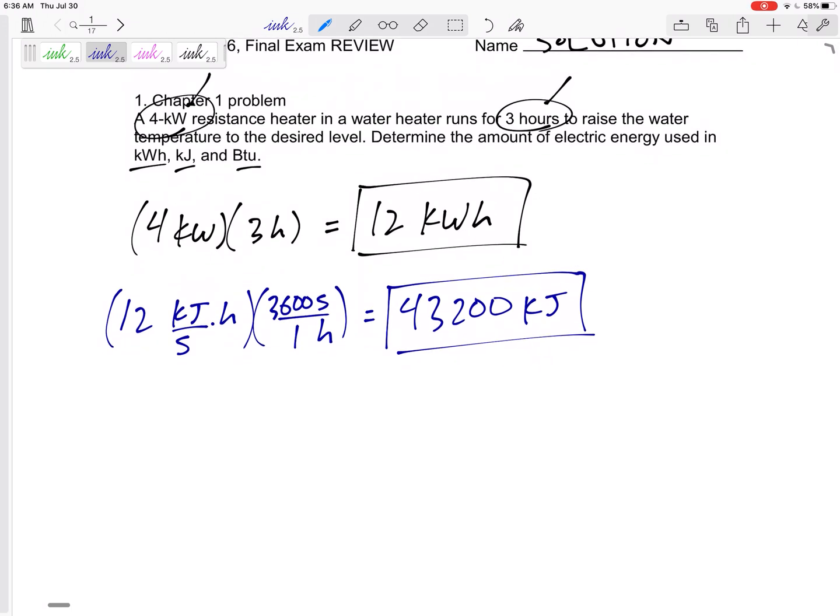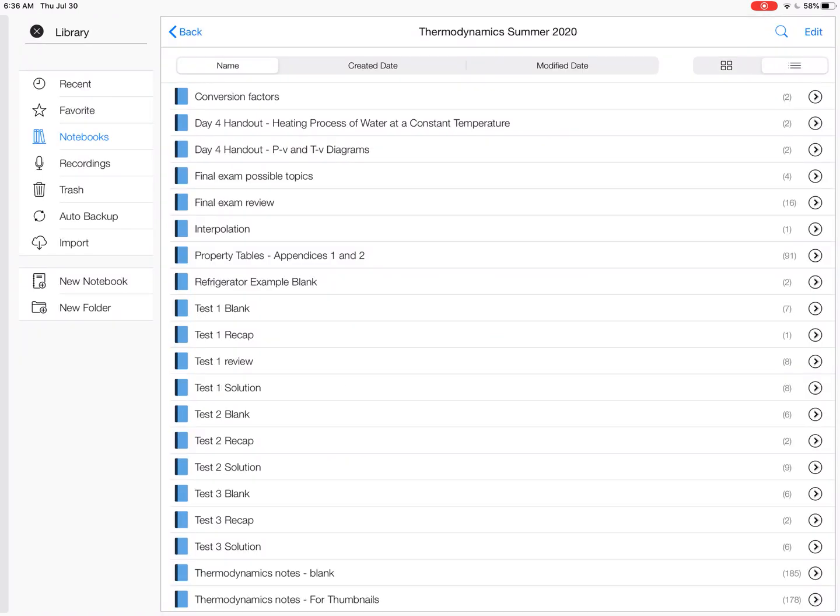And it also says BTU. So let's convert 43,200 kilojoules to, maybe if I'm lucky, I could find just a kilojoule to BTU on our unit conversion sheet.